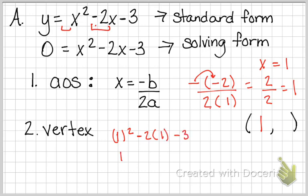1 squared is 1. -2 times 1 is -2 minus 3. Then we're going to simplify that down. 1 and -2, and then -3 gives us -4. So we know our y value equals -4.